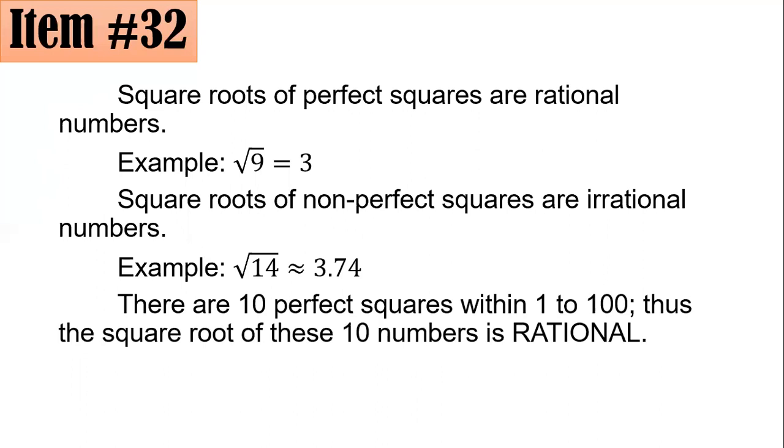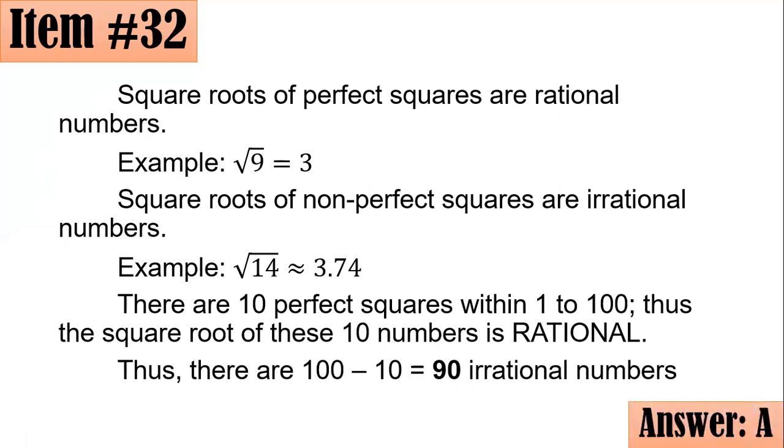We could see that there are 10 perfect squares from 1 to 100: 1, 4, 9, 16, 25, 36, 49, 64, 81, and 100. Since 10 of them are perfect squares, which means if you take the square roots of these 10 numbers, their square roots will be rational. Since 10 out of the 100 are rational, then that means 100 minus 10, or 90 of them, are irrational numbers. Hence letter A is the correct answer.